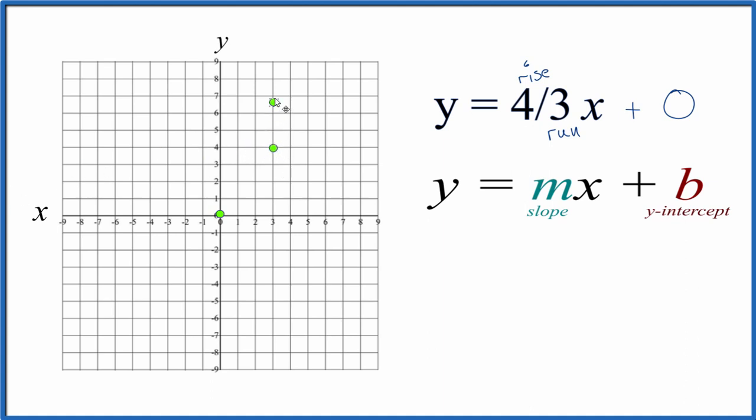From there we could rise one, two, three, four more, and go over one, two, three. And that point is on our line as well.